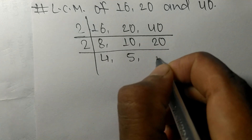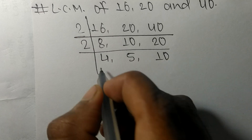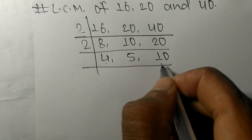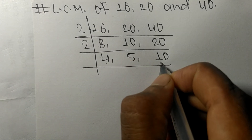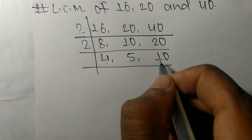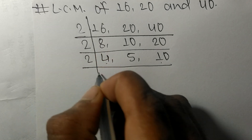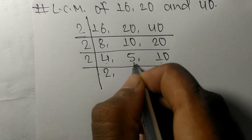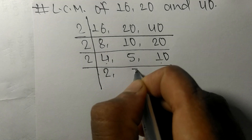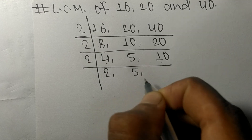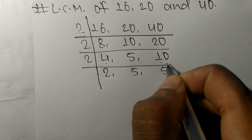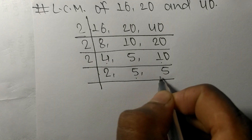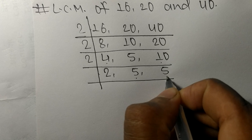Now 4 and 10 are exactly divisible by 2: 2 times 2 equals 4, 5 is not divisible so it stays the same, and 2 times 5 equals 10. So now we divide by 2 again: 2 times 2 equals 4, and 5 stays the same, giving 2, 5, and 5.